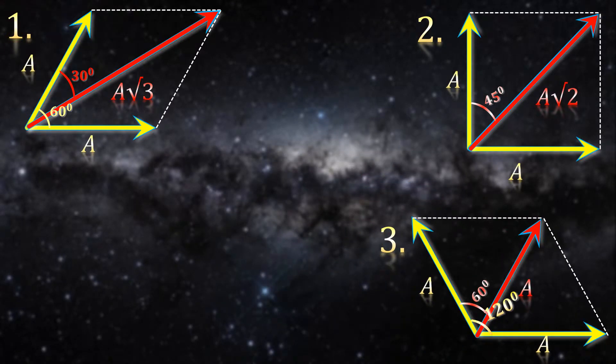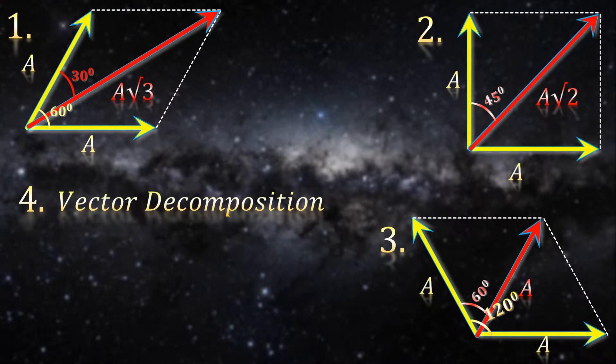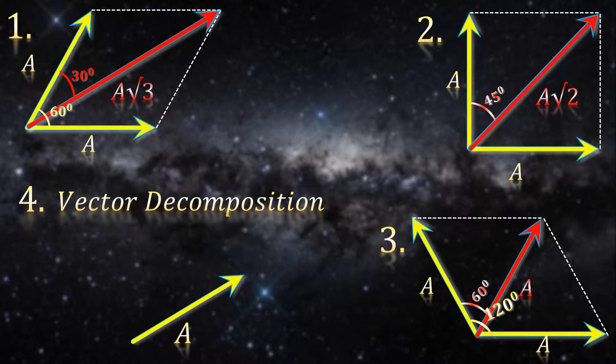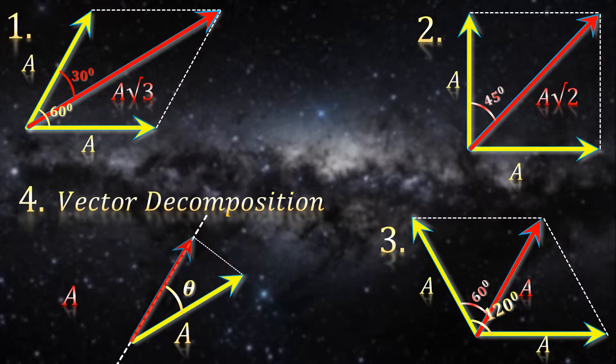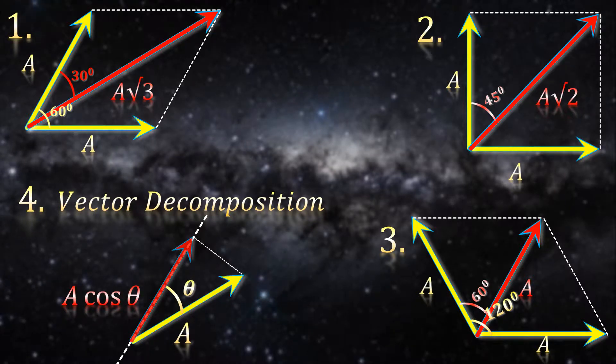Finally, I want to remind you of vector decomposition. If you have any vector of magnitude a and you want to calculate its effect or component along a direction making angle theta, then that component will always be a cos theta. Alright, with these basics, we are ready to tackle some questions now.